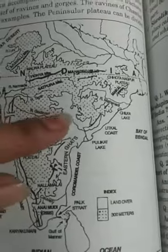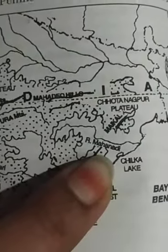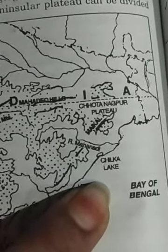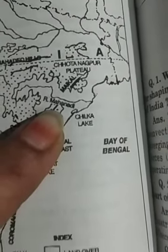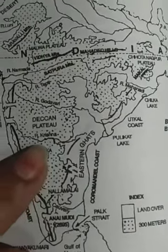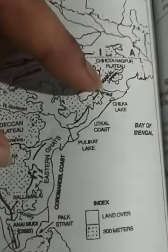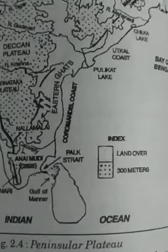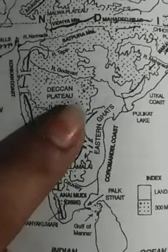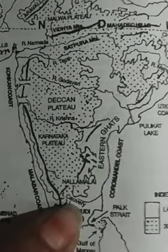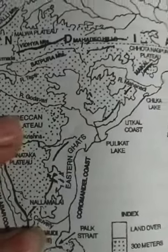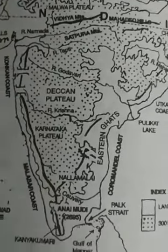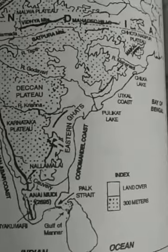The eastern coastal plain has two parts — northern and southern. The northern part lies between the Mahanadi River in Odisha and the Krishna River; this is known as the Northern Circars plain. The southern part between the Krishna River and the Kaveri River is known as the Coromandel or Carnatic plain. These are the two distinguished divisions of the eastern coastal plain.